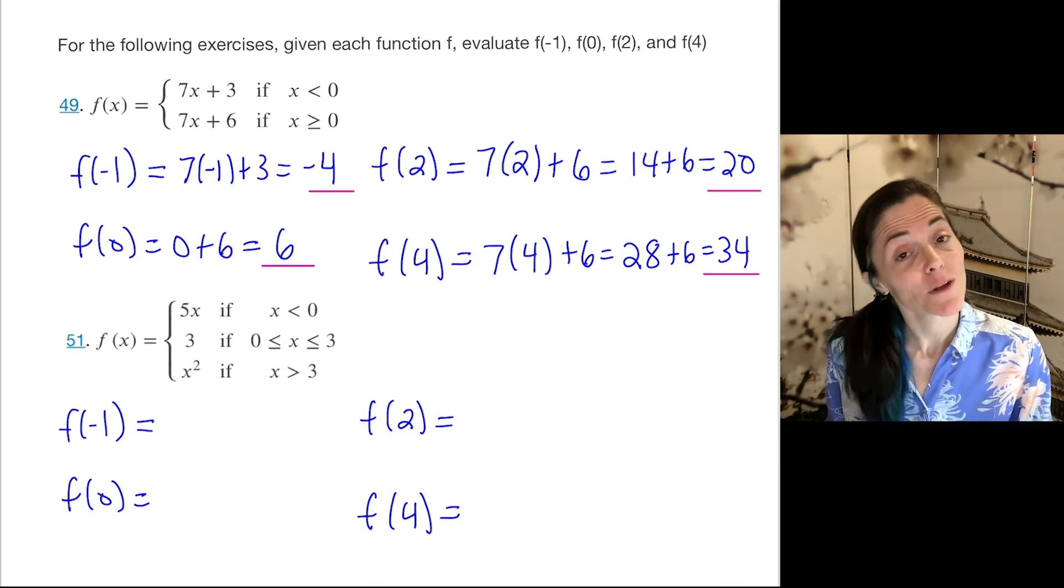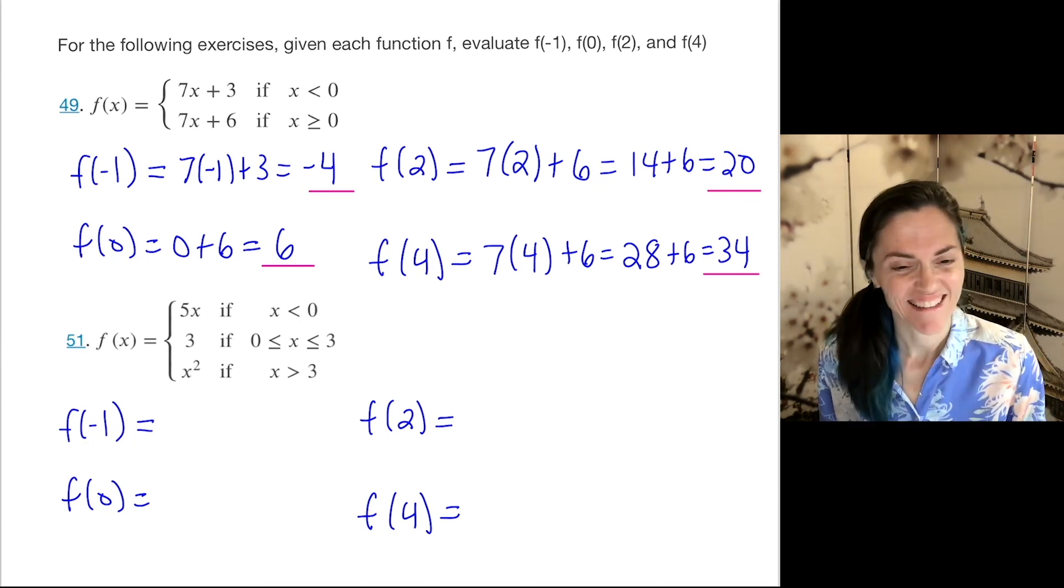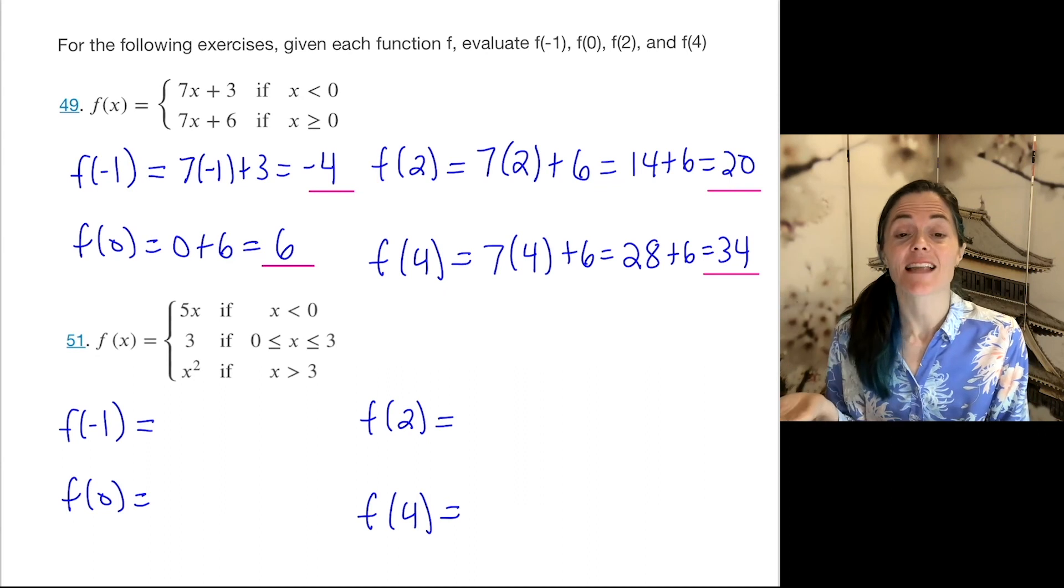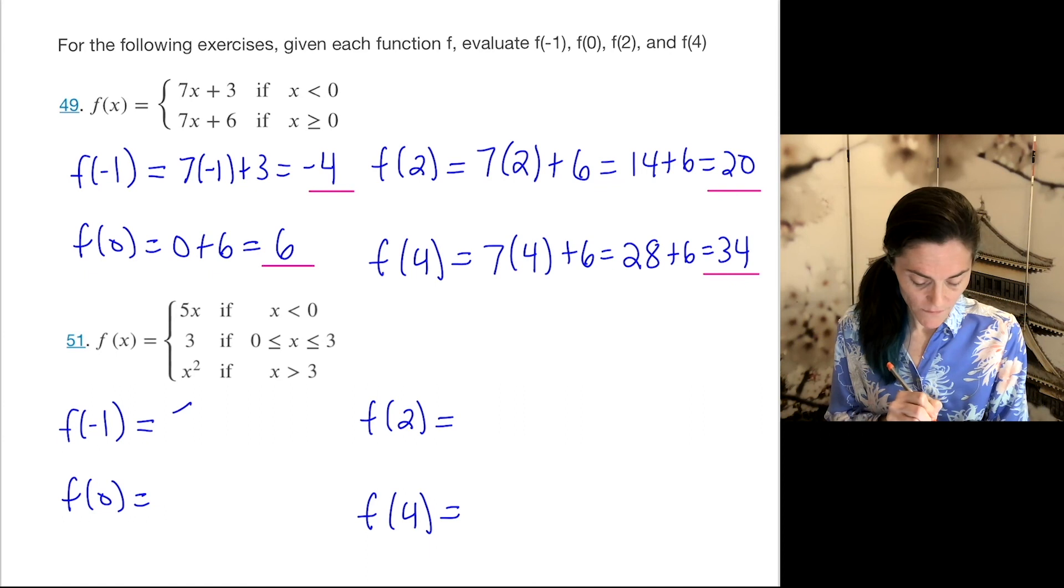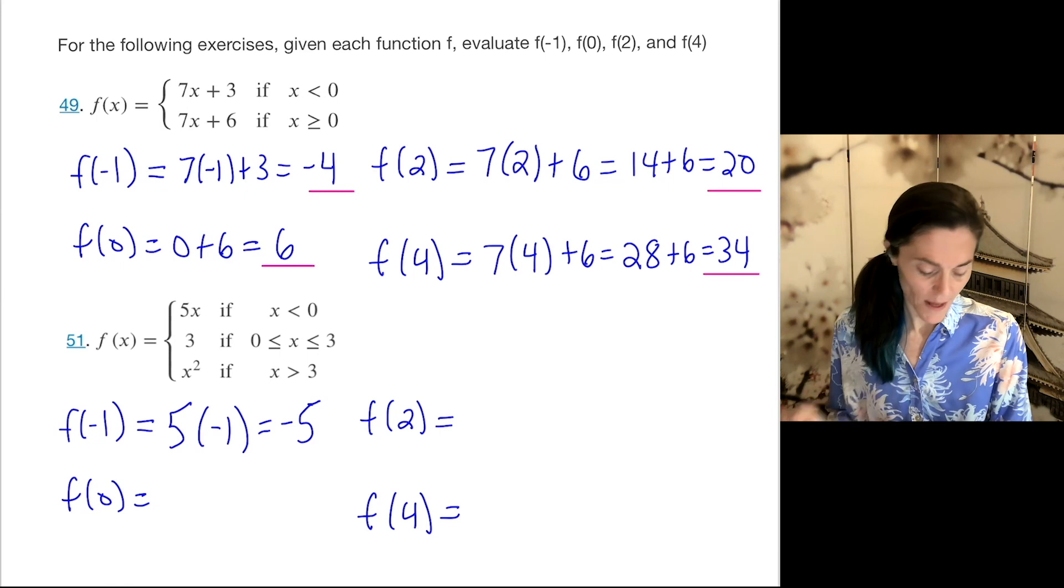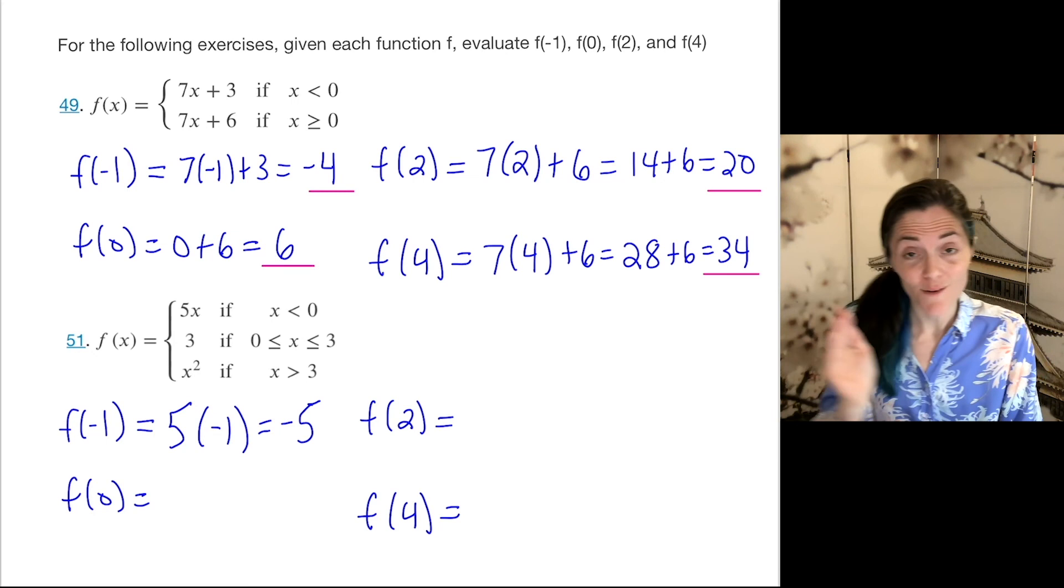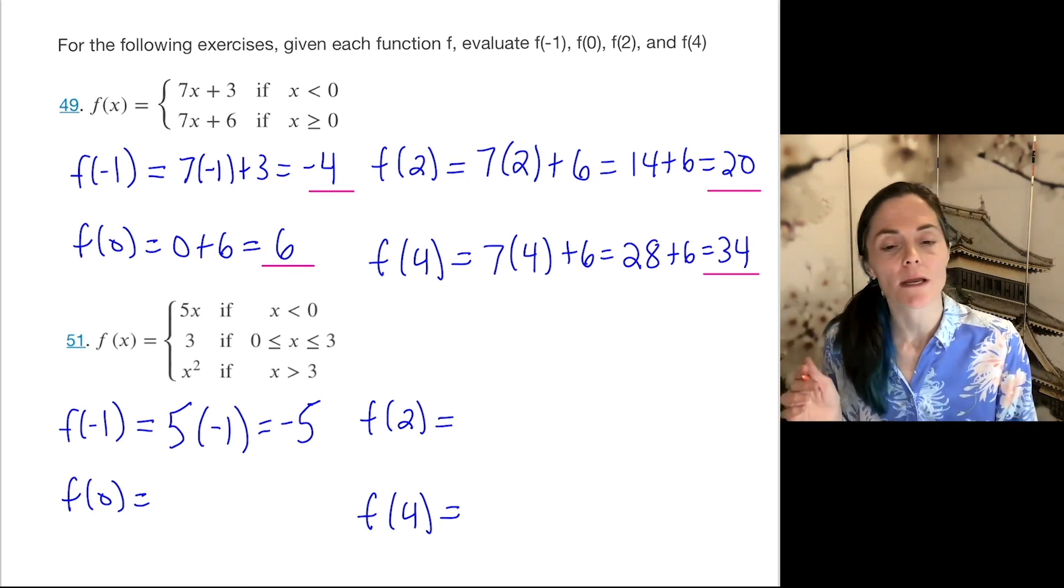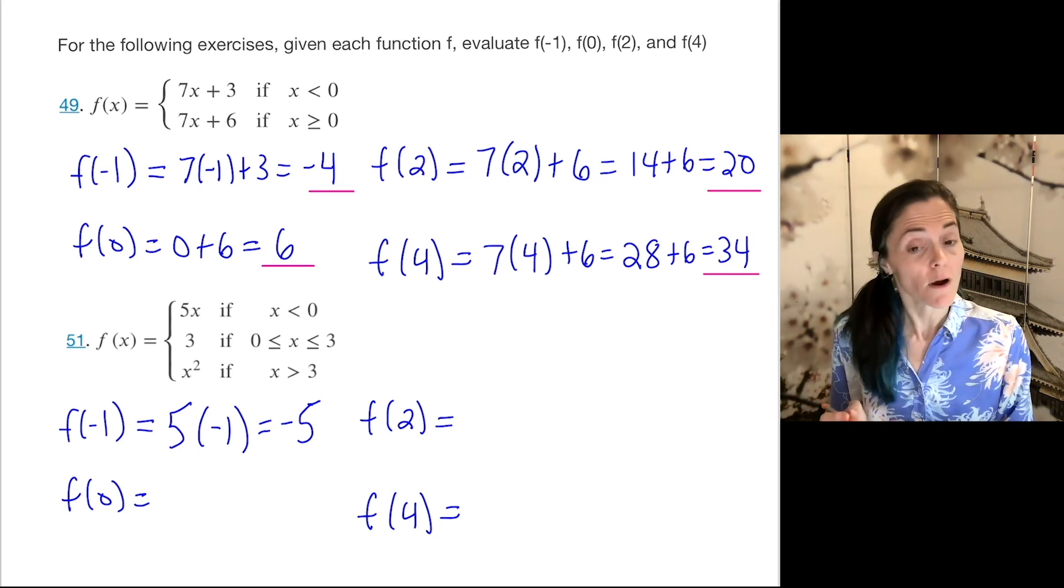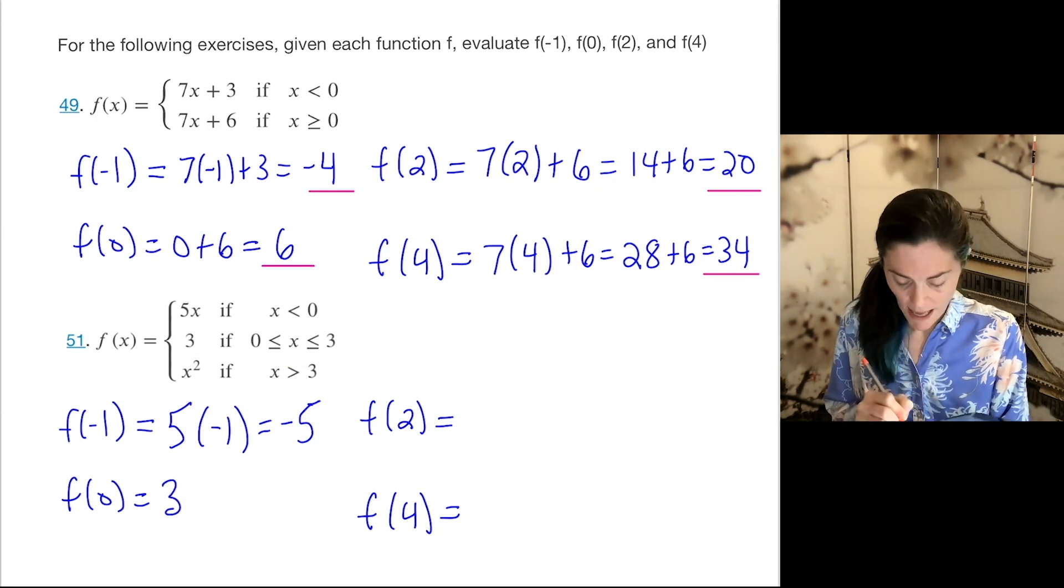The next function in 51, we have three intervals. First, if x is negative, the function is 5x. And f(-1) will have this function definition. So this will be 5 times minus 1, which is negative 5. Minus 1 is negative. Then, if x is in the closed interval from 0 to 3, the function is constant, it's just y equals 3. And 0 and 2 are both here. So here, the function is constant at 3.